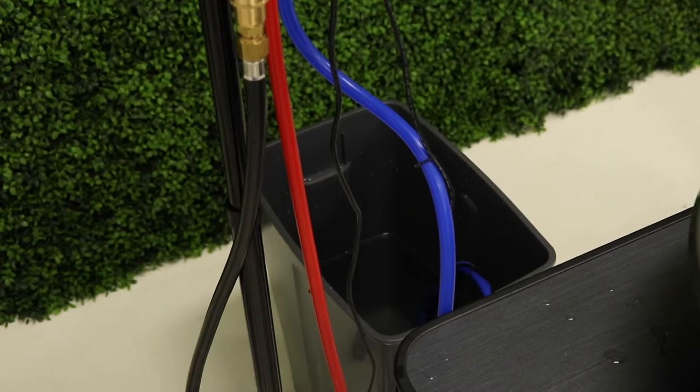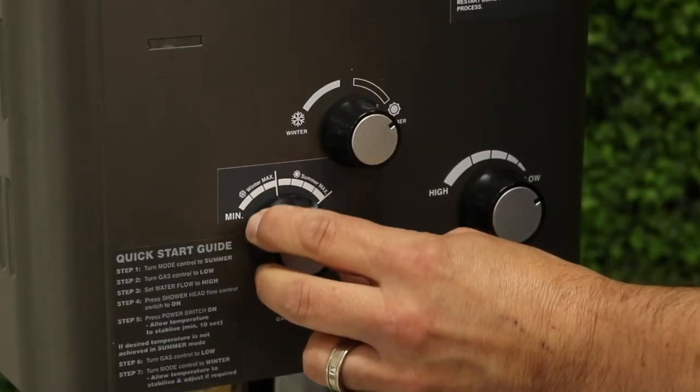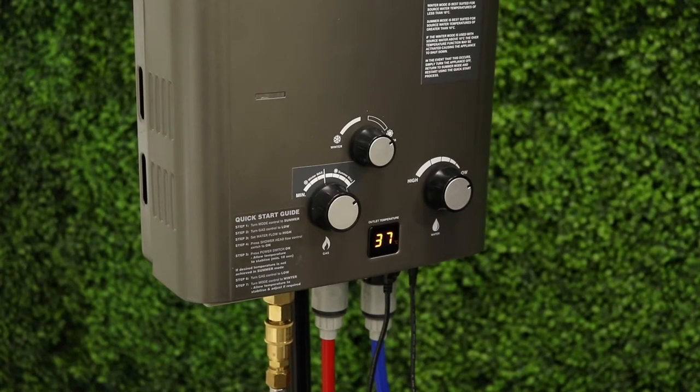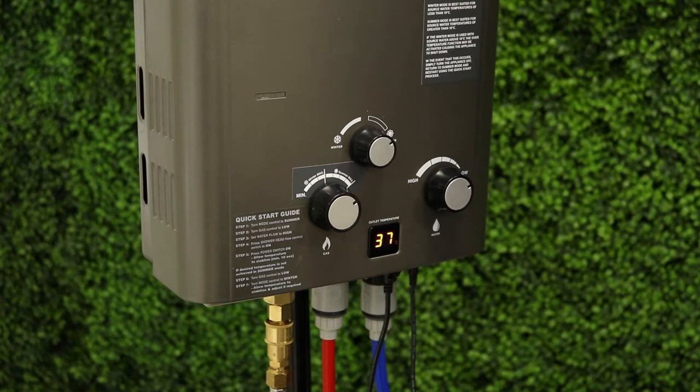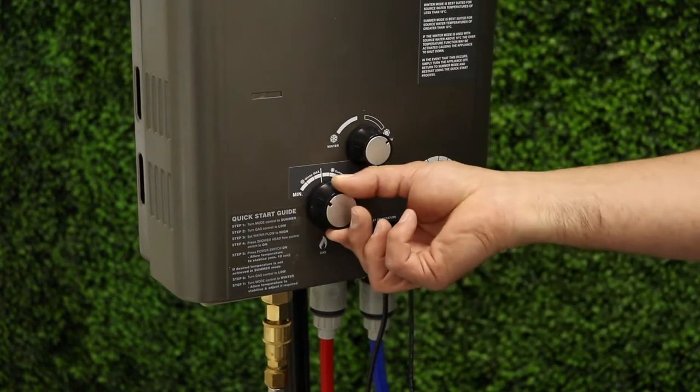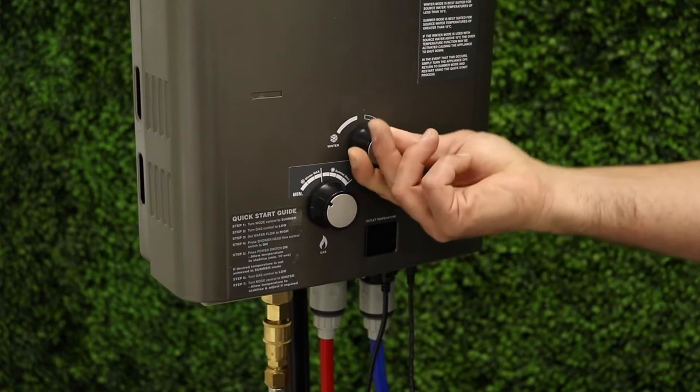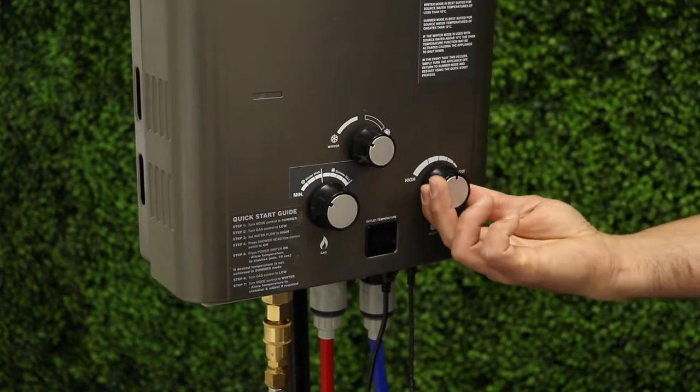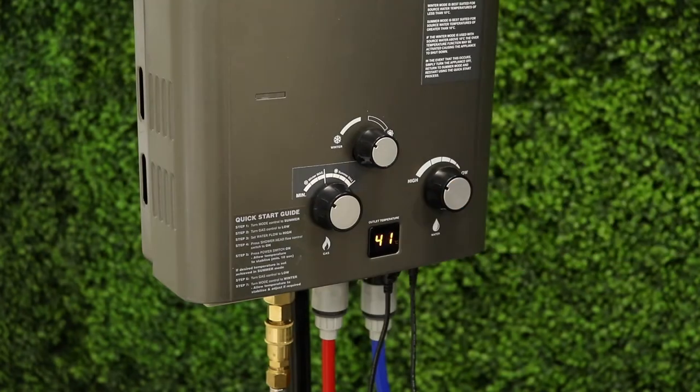Here we have a bucket of tap water and when we run the unit on summer mode with gas set to maximum and the water flow set to low we get a consistent temperature of 37 degrees. When we run the same water with the unit in winter mode, the gas flow set to minimum and the water flow set to high, we reach a consistent temperature of 42 degrees.